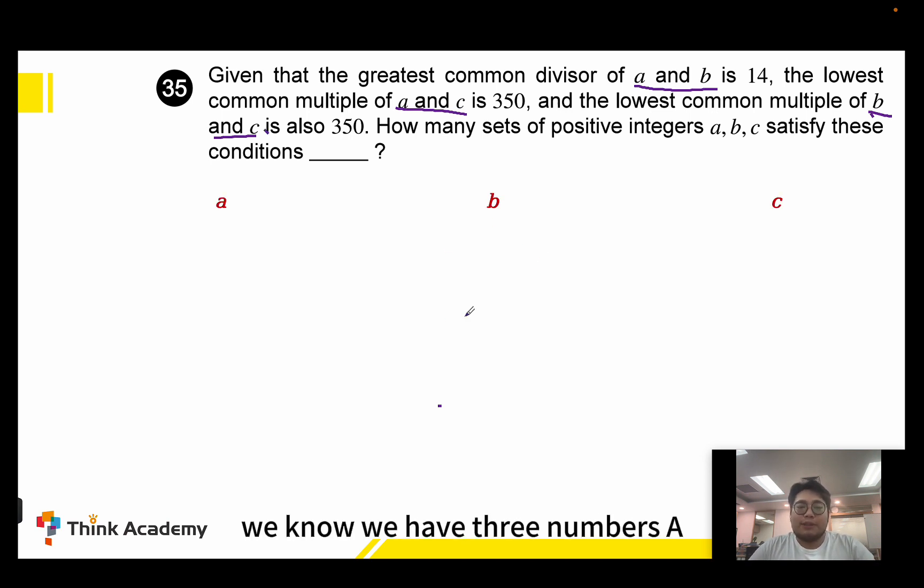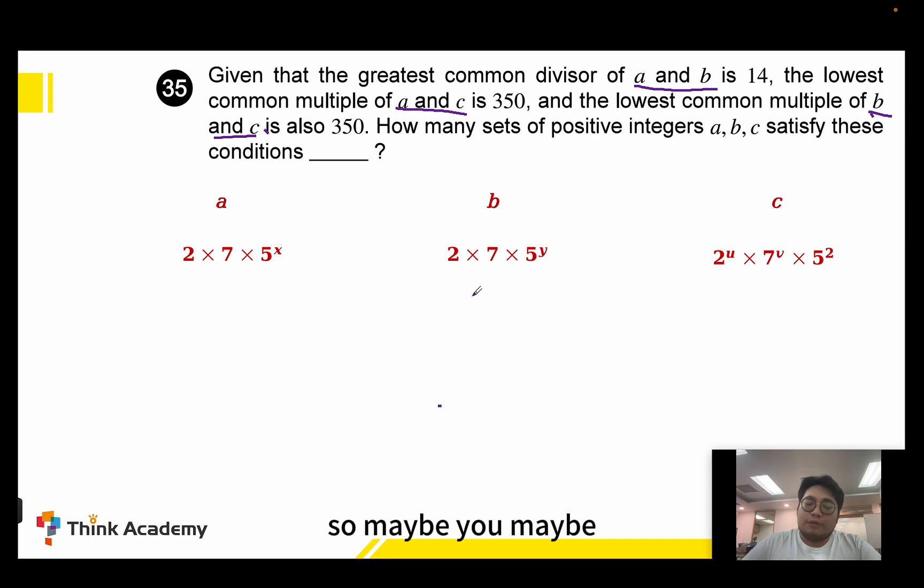After reading the question, we know we have three numbers A, B, and C. We can rewrite them in this form: A as 2×7×5^X, B as 2×7×5^Y, and C as 2^U×7^V×5^2.